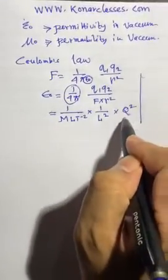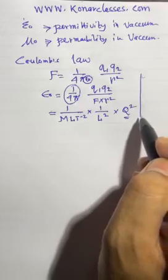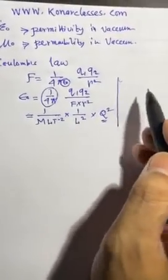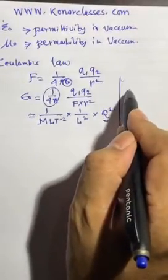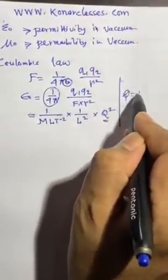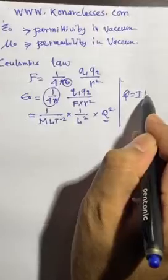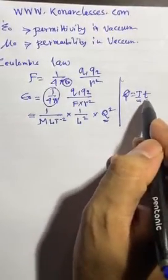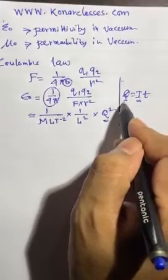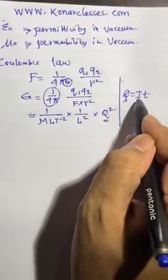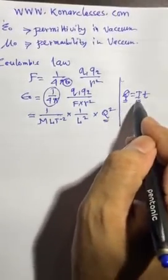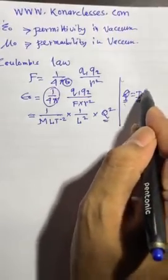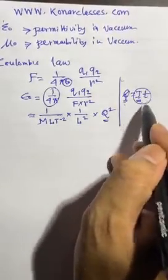Charge is not the fundamental unit, so in the basic SI units, charge is not there. So we can put q equal to i into t, where t is the time and i is the ampere. So the charge part becomes ampere into time. We will replace the dimension of q by i and t.